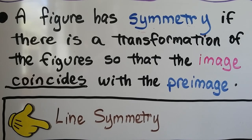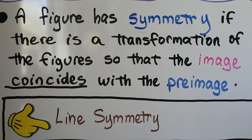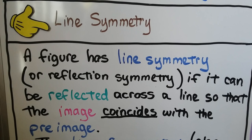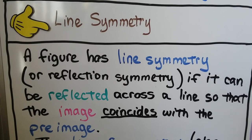A figure has symmetry if there's a transformation of the figure so that the image coincides with the pre-image. We learned about symmetry in grade school. A figure has line symmetry or reflection symmetry if it can be reflected across a line so that the image coincides perfectly with the pre-image.